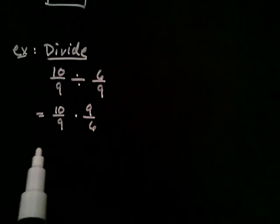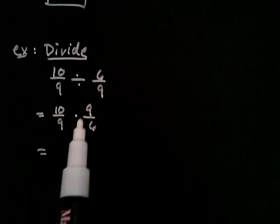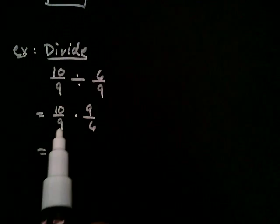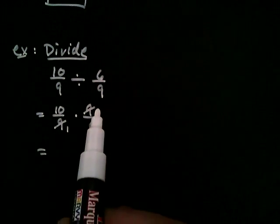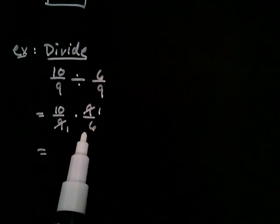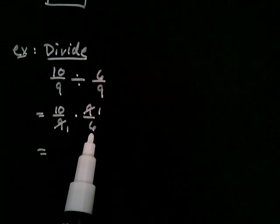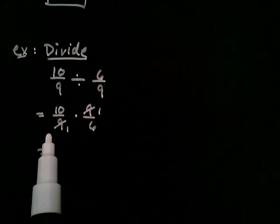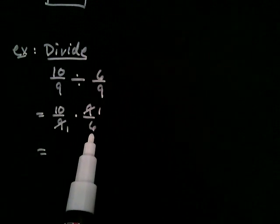Now I could proceed as I did in the previous example, and find the prime factored form of all these numbers. Or I could simply note that the two nines will cancel, and leave a one. And do you see what goes into both ten and six? Well, ten I know is two times five, and six I know is two times three. So what people sometimes do, instead of writing the prime factored form, you know, instead of writing this as two times five, and this is two times three,